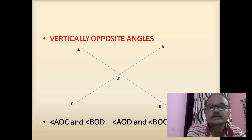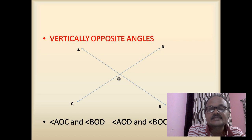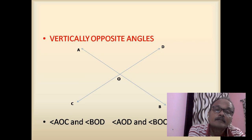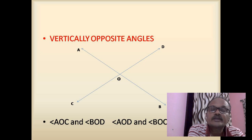We have already studied what intersecting lines are. When two lines pass through one point, they are called intersecting lines. But if three or more lines pass through the same point, they are not called intersecting lines — they are called concurrent lines. Three or more lines passing through the same point are called concurrent lines.